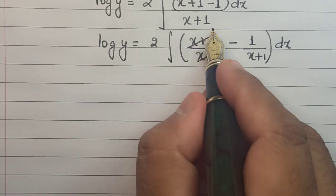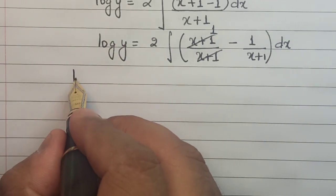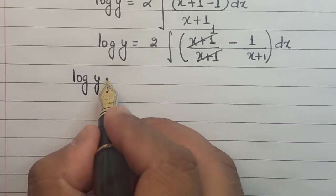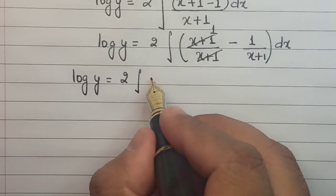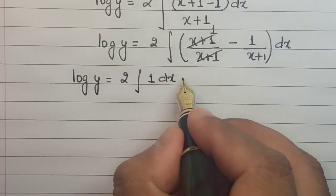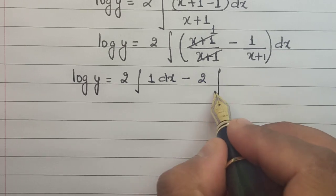So this (x+1) and this (x+1) gets cancelled out. This becomes log y = 2∫1 dx - 2∫(1/(x+1))dx.